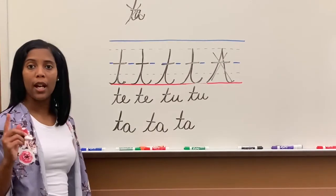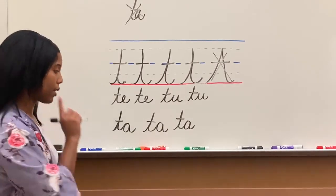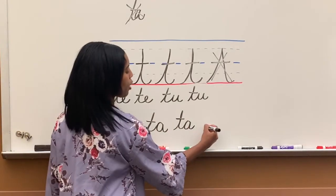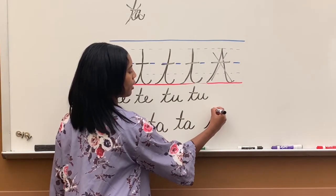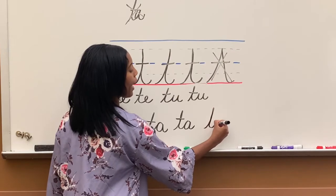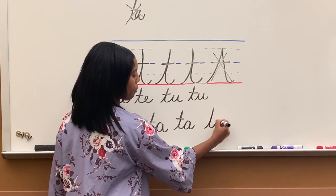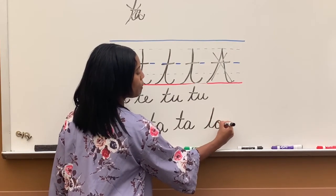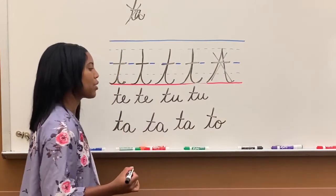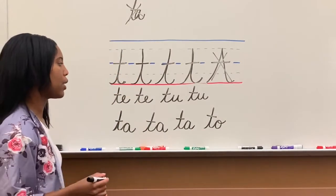The same rule applies whenever I do T-O. Same exact thing. I start with the T. I do O halfway, I come back around, and then I loop the O out. Just like I showed you on yesterday, how we loop the O, you do that same thing.